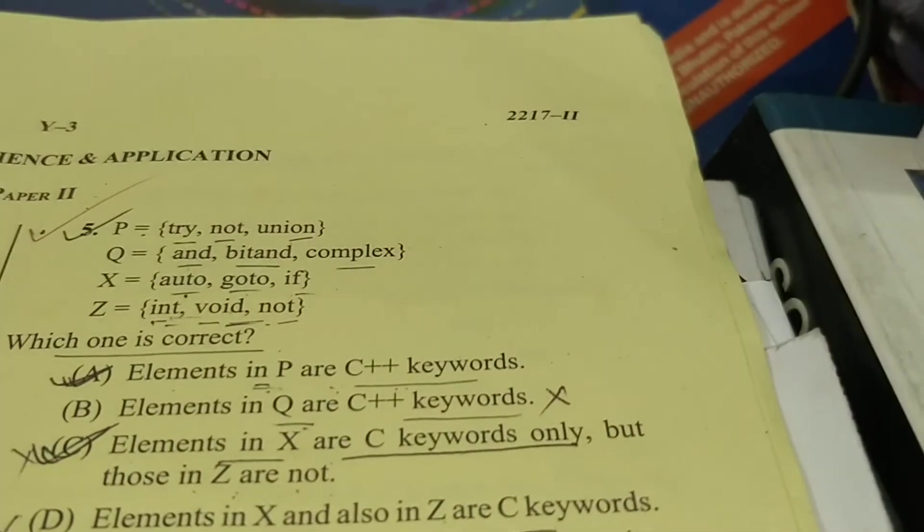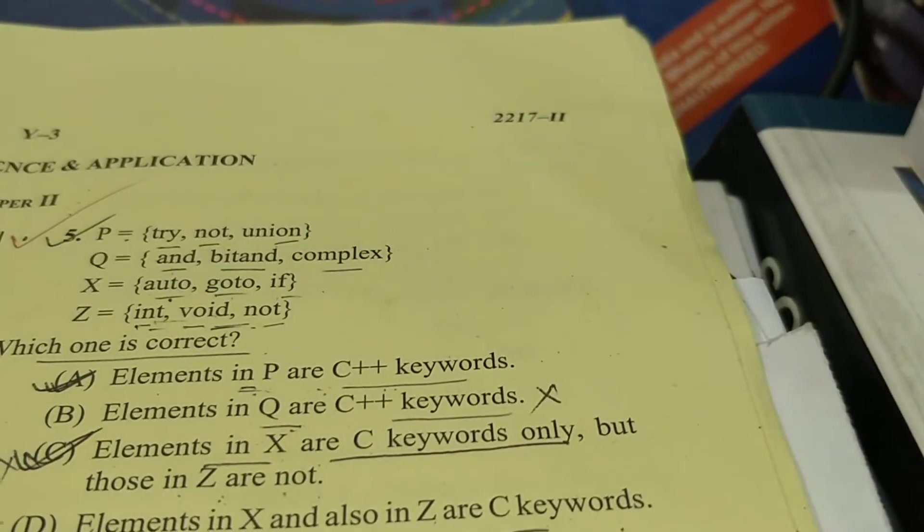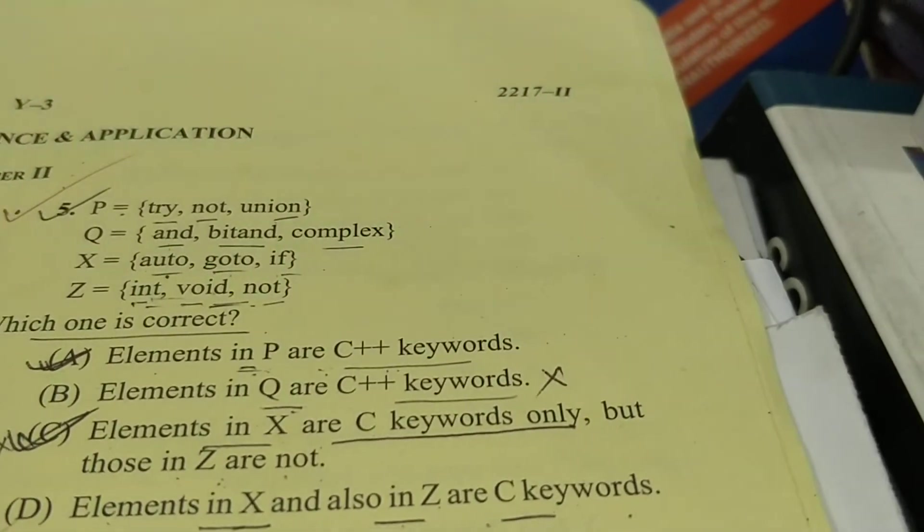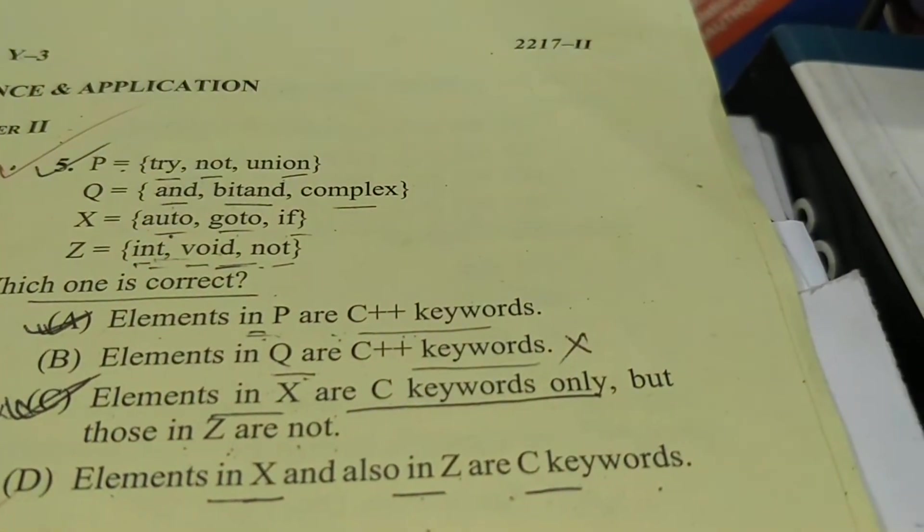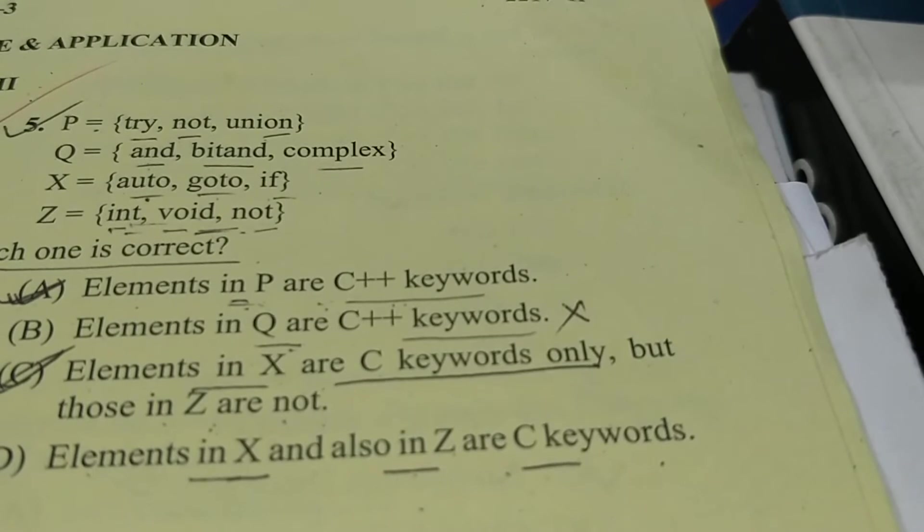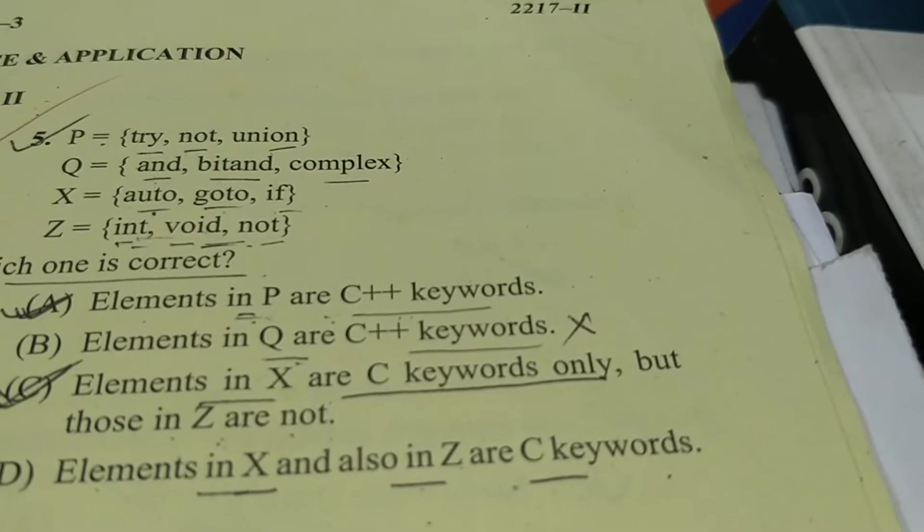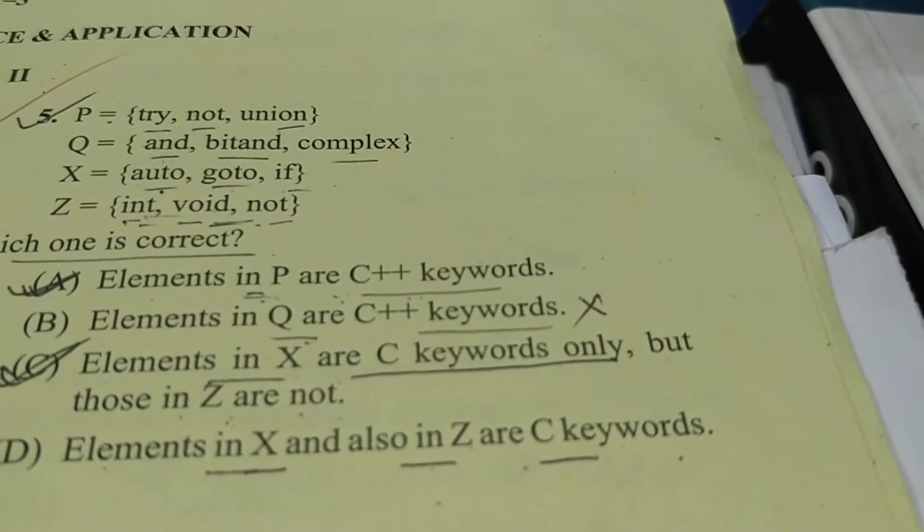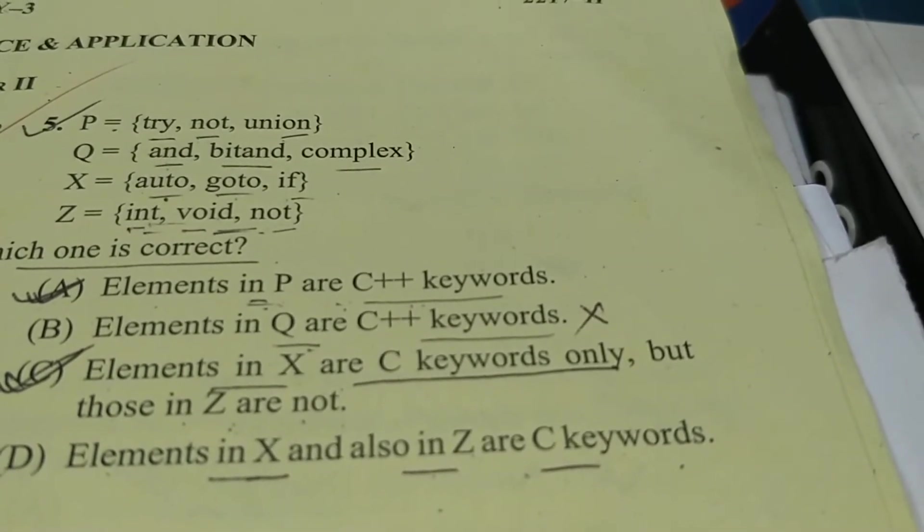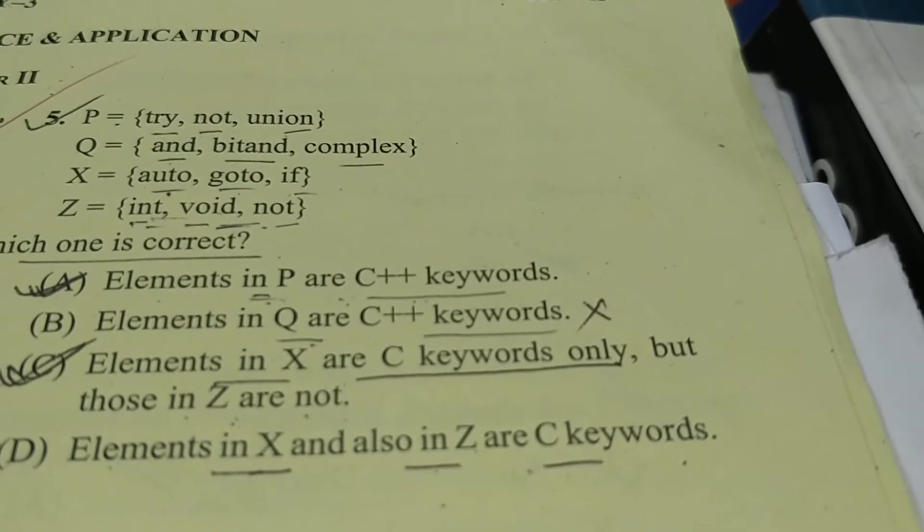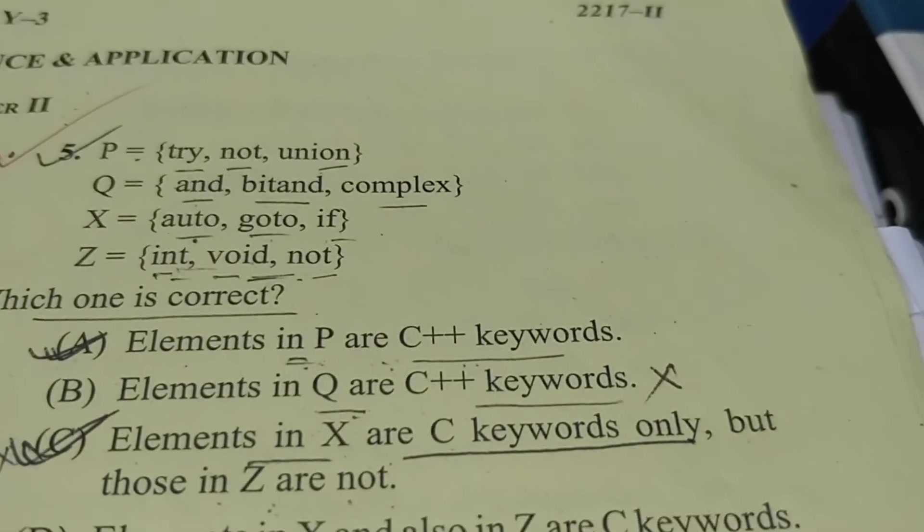Now the next question: four sets are given with elements of C and C++ keywords. So we see in P that try is a C++ keyword, not is a C++ keyword, union is also C++ as well as C keyword. In Q: int, bit, and, complex - complex is not a keyword for both languages C++ and C. And X: auto, goto, it - these are the C keywords. And Z: int, void, not - these are the C++ keywords. So which one is correct? Option A: the elements in P are C++ keywords. So A is the correct answer.